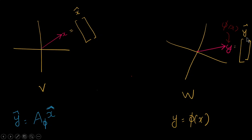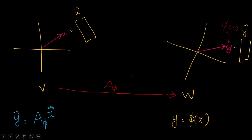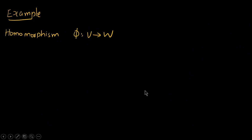How do we find the vector Y? We apply the transformation: Y = A_phi times the vector X. Phi represents the transformation from V to W, and A_phi is its matrix form. To convert any vector from one space to another, multiply by the corresponding transformation matrix. This product gives you the vector in the other vector space.